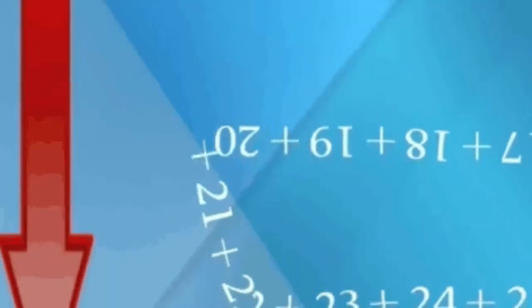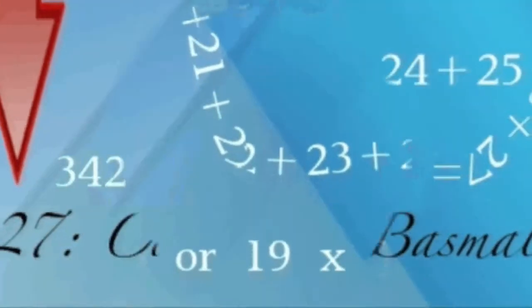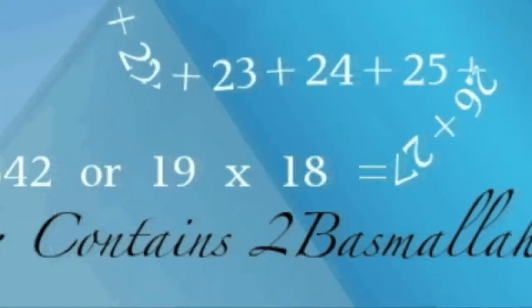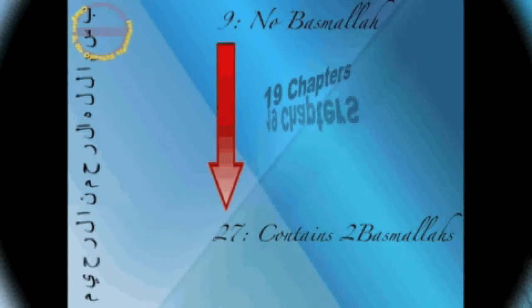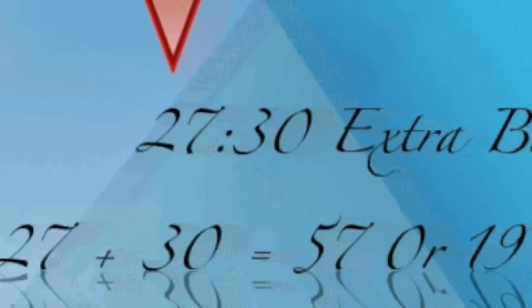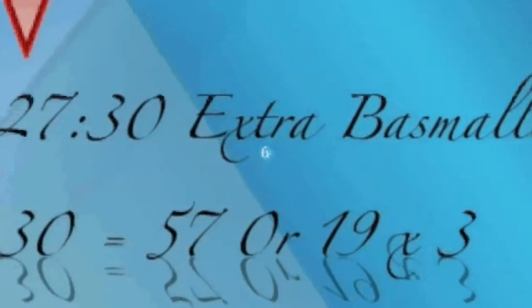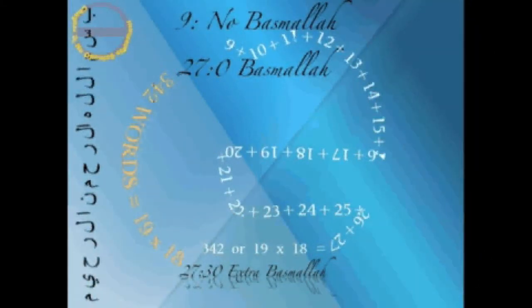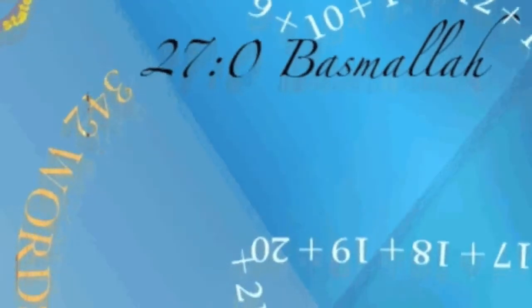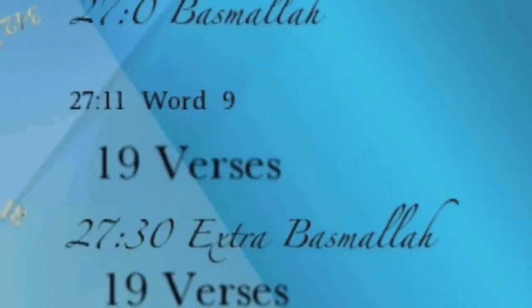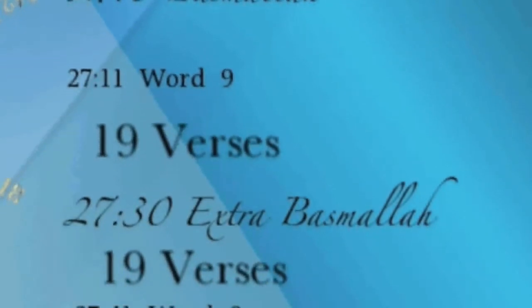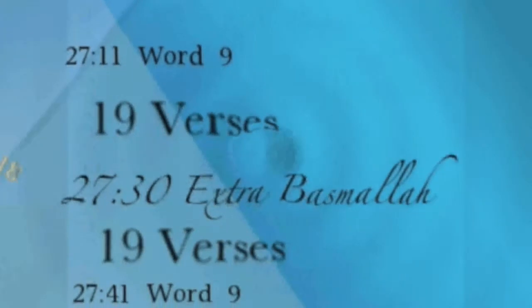23. Therefore the number of opening statements is 114 or 19 times 6. We notice that between the missing Basmela of chapter 9 and the extra Basmela of chapter 27 there are precisely 19 chapters. Also, the extra Basmela occurs in chapter 27 verse 30. If we add up these numbers we get 57, or 19 times 3. If you add the chapter numbers from 9 to 27 you get 342, which happens to be the number of words between the opening statement of chapter 27 and the extra opening statement in verse 30. Needless to say that 342 is 19 times 18. The word 9 occurs twice in chapter 27, the first exactly 19 verses before the extra Basmela and the second 19 verses after the extra Basmela. In other words, the extra Basmela is surrounded by 2 nines.